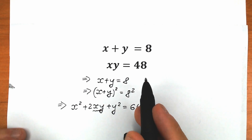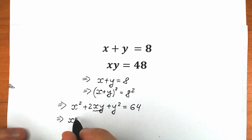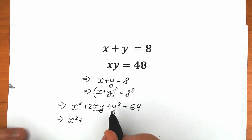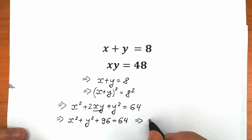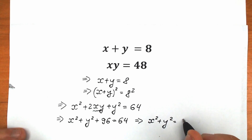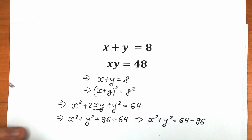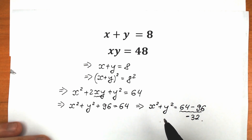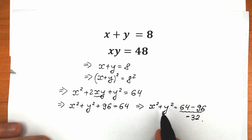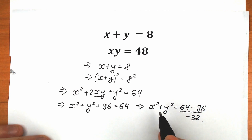We know xy equals 48, so we can plug in this value. We have x squared plus 2 times 48 — that's 96 — plus y squared equals 64. Now let's bring this constant from the left side to the right side. As a result, we have x squared plus y squared equals 64 minus 96, which is negative 32. The sum of two squares is always positive — it doesn't matter if x or y can be negative, x squared and y squared are always positive — so this expression cannot equal a negative value.